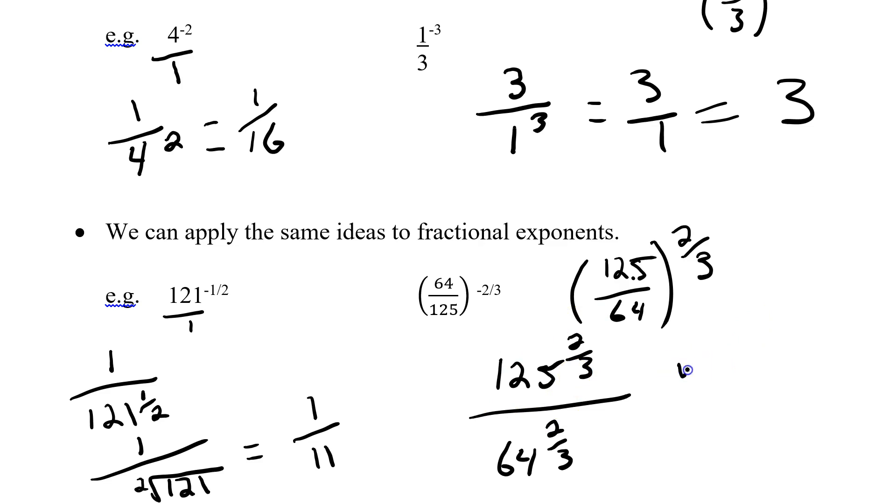Open up a root sign. Put 125 in there. Now the index is going to be the denominator, which is 3, so the cubed root. And everything to the power of 2. Divided by root sign of 64. The index is going to be the denominator of 3, the power of 2.